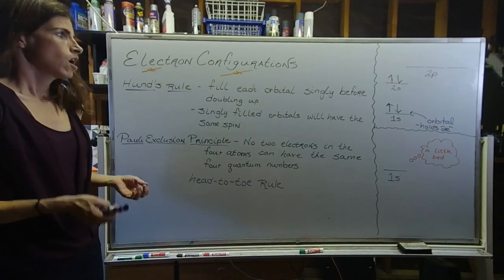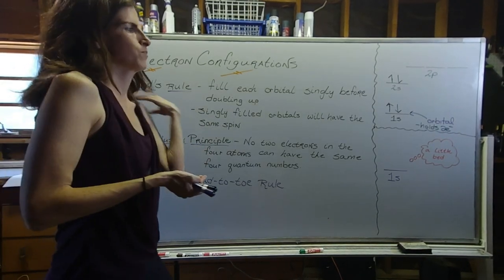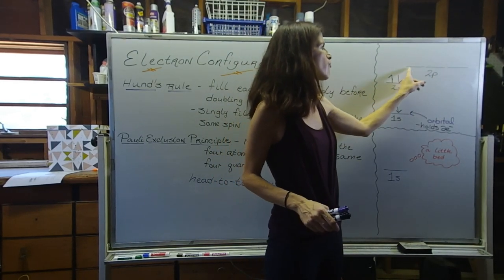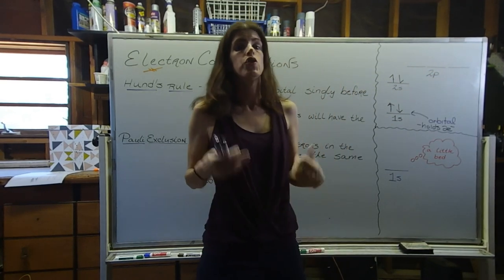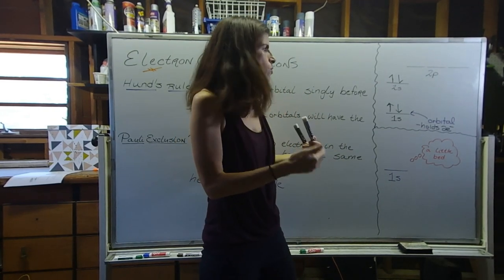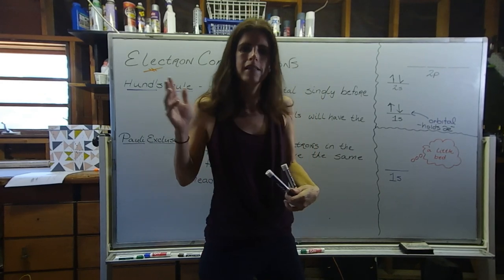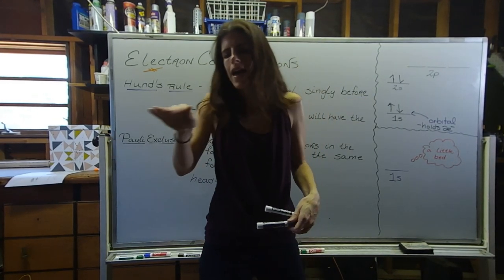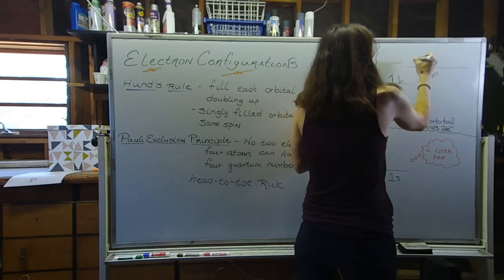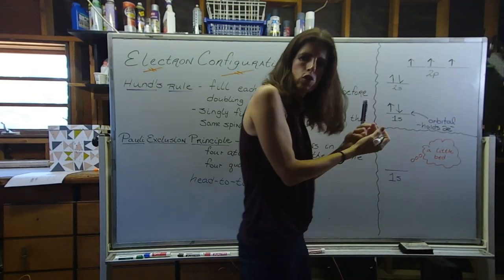Our first rule is Hund's rule, which tells us that we have to fill each orbital singly before we start to double up. When we get up to the 2p level, there are three orbitals that can hold up to six electrons total. But if we only need to put three electrons there, instead of squishing everyone in one or two beds, we want to give everybody their own space — single, single, single — rather than squishing them all together.